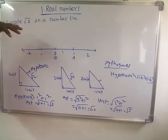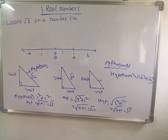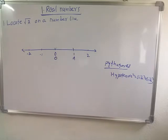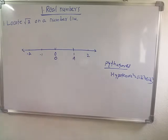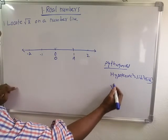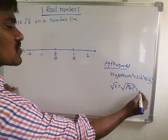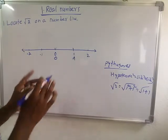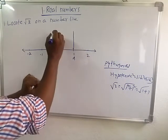Now, how do we locate square root two on a number line? Square root two can be written as the square root of one squared plus one squared, which equals the square root of one plus one, that is the square root of two. So first of all, we draw a number line.